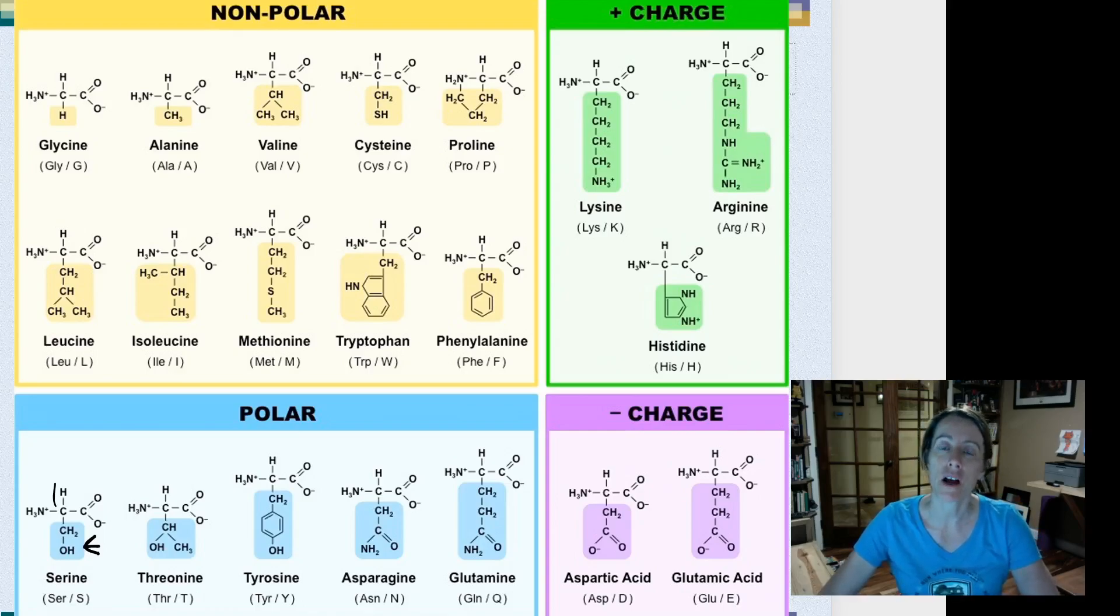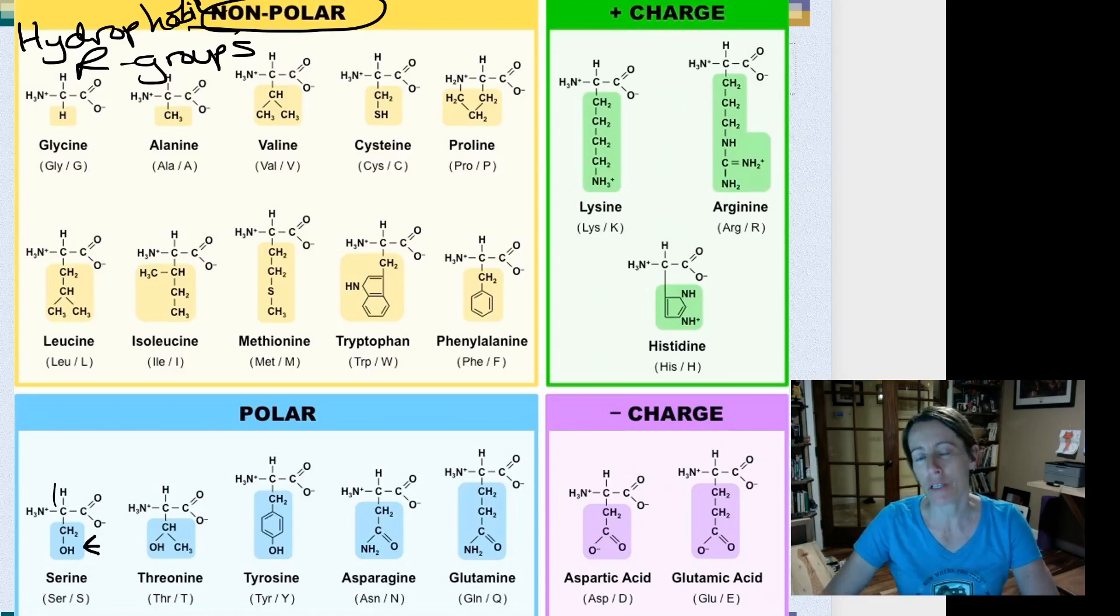Hydrophobic things are things that do not like water. And in general, things that are hydrophobic are nonpolar. Remember, they don't have a charge, so they're not attracted to water. So these are amino acids with hydrophobic R groups. It's important that we note that their side chains are nonpolar.